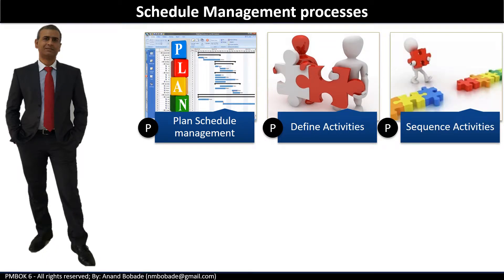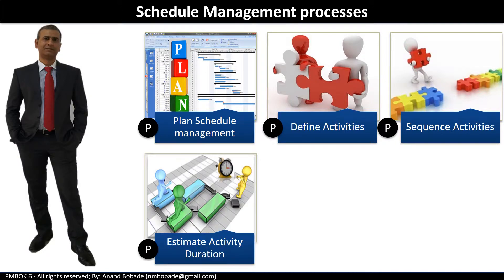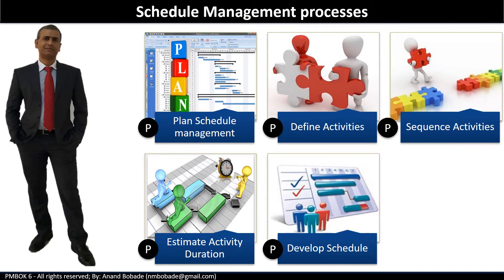Sequence activities, again under planning process group, is the process of identifying and documenting relationships among the project activities. Estimate activity duration, again under planning process group, is the process of estimating the number of work periods needed to complete individual activities. Develop schedule, under planning process group, is the process of analyzing activity sequences, duration, resource requirements, and schedule constraints to create the project schedule model.